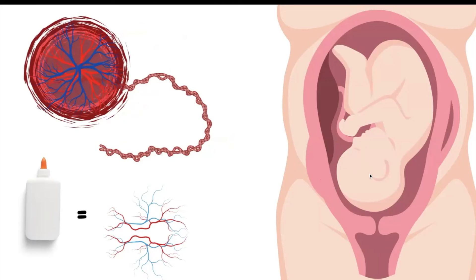When the baby comes out, we want that extra length or distance for the umbilical cord to give us leeway with delivery. Because if we get nuchal cord — it's wrapped around the neck — we want that extra slack to be able to lift it over the baby.